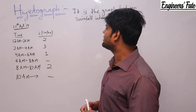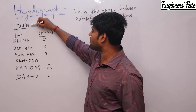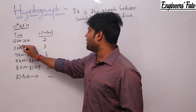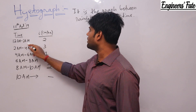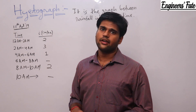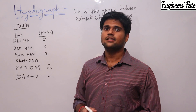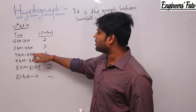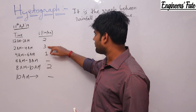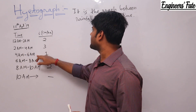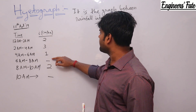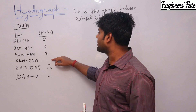Suppose this data is given and we have to plot a hyetograph. On April 11th, 2019, a rainfall occurred. From 12 am to 2 am the intensity was 2 cm/hr. From 2 am to 4 am the intensity was 3 cm/hr. From 4 am to 6 am the intensity was 1 cm/hr. From 6 am to 8 am no intensity value is given, meaning no rainfall occurred.